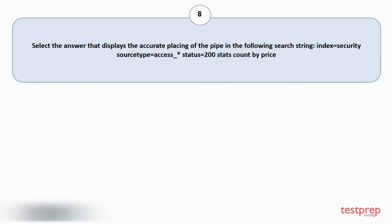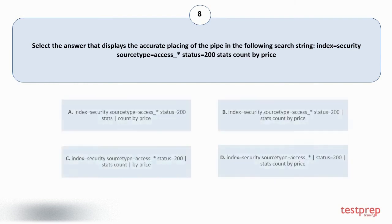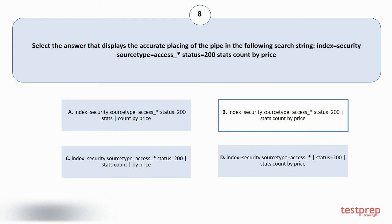Question number eight: select the answer that displays the accurate placing of the pipe in the following search string for the stats count by price. Your options are shown on screen. The correct answer is option B.